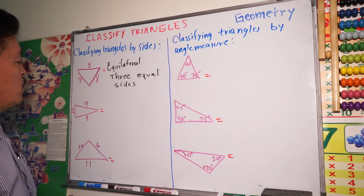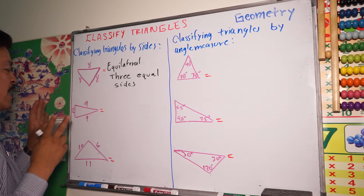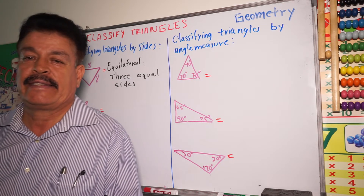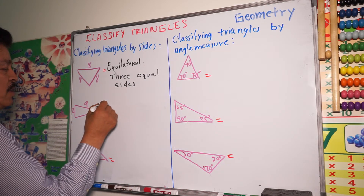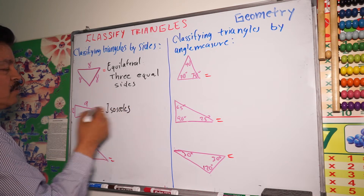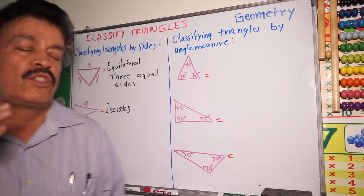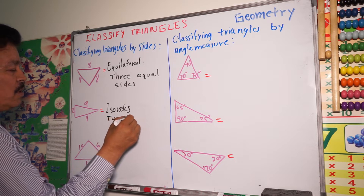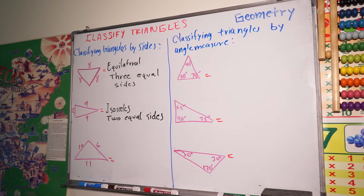The second one: this triangle has two sides equal and one side that is not equal. This kind of triangle is called an isosceles triangle. So the isosceles triangle has two equal sides.